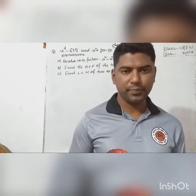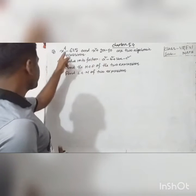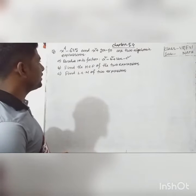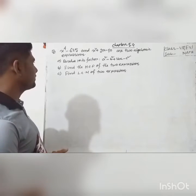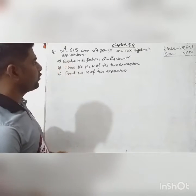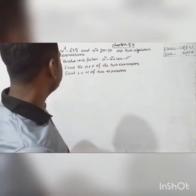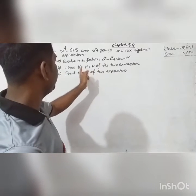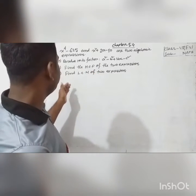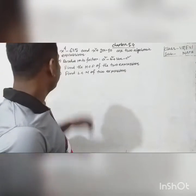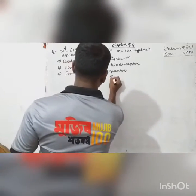My stream consists of two algebraic expressions: x⁴ minus 625, and x² plus 3x minus 10. We have three questions: number A - resolve into factors a² minus b² plus 2bc minus c²; number B - find the HCF of the two expressions; number C - find the LCM of the two expressions.